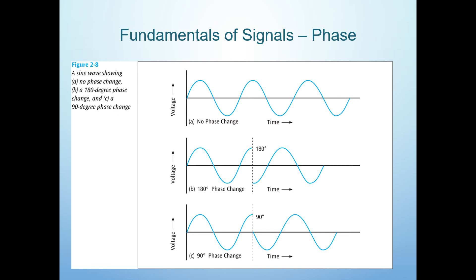Here in this picture, we have three sine waves. The upper wave has no phase change, B has a 180 degree phase change, and C has a 90 degree phase change.